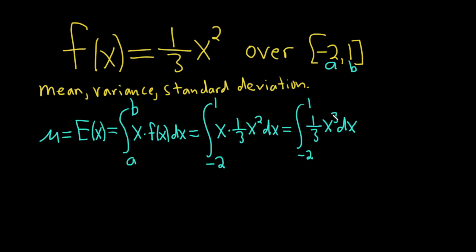We add 1 to the exponent giving us 4, and then divide by 4. So μ equals one-third x to the fourth over 4, going from negative 2 to 1. This equals one-twelfth x to the fourth from negative 2 to 1.